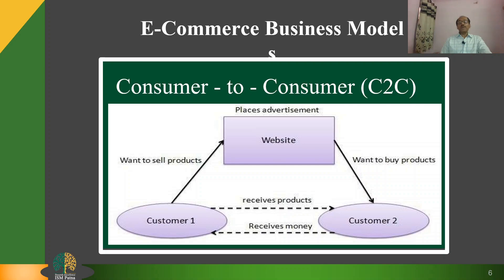Consumer to Consumer, C to C: a website following the C to C business model helps consumers sell their assets like residential property, cars, motorcycles, etc., or rent a room by publishing their information on the website. The website may or may not charge the consumer for its services. Another consumer may opt to buy the product of the first customer by viewing the product advertisement on the website.